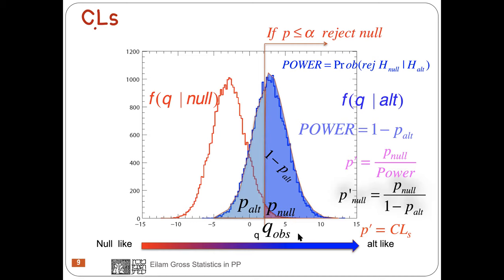I go to my one LHC experiment after running for two to three years and look at the data. I calculate the test statistic and get one number — we call this number Q_observed. This is a measurement; it's not under any hypothesis. It's a likelihood ratio: the probability to observe the data under the null hypothesis over the probability to observe the data under the alternative hypothesis. You don't assume anything — you just look at the ratio of the likelihoods of one hypothesis with respect to the other.